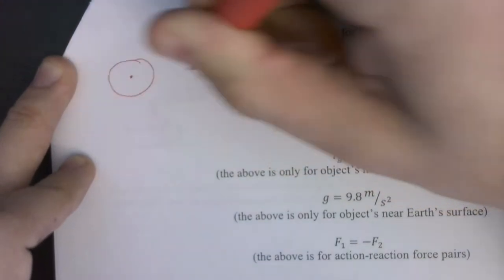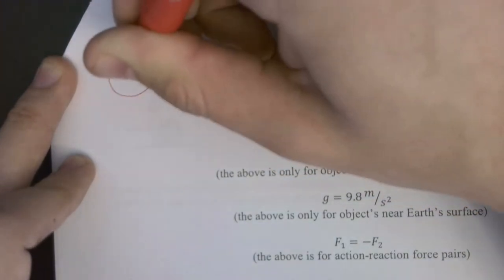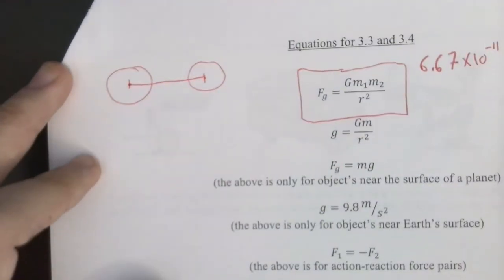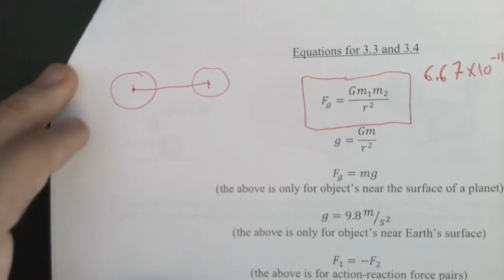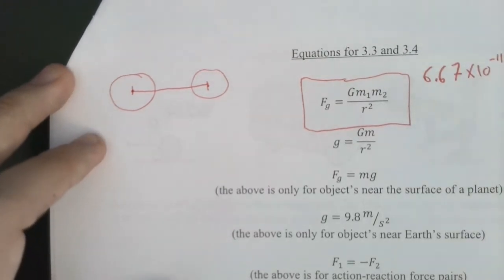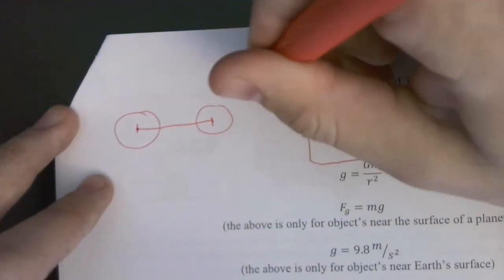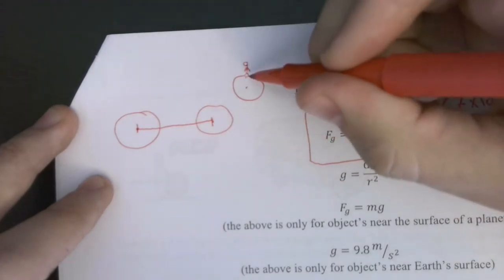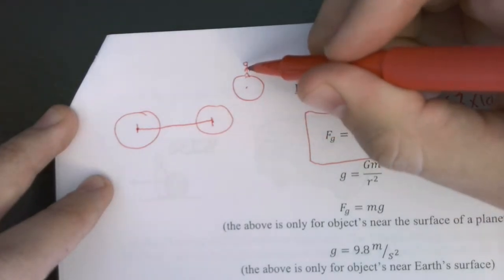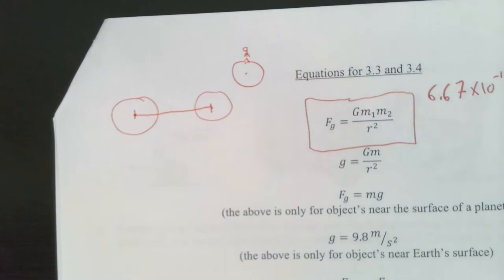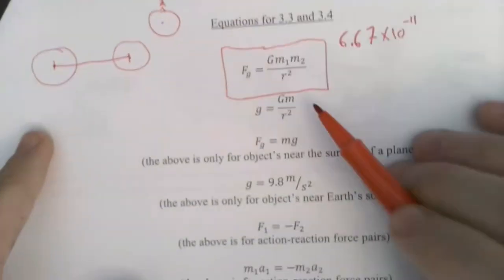For example, if I have the moon and the earth, you've got to measure from the center of one to the center of the other. For something like a person standing on a planet, you can just use the radius of the planet. Because if you're standing on a planet, the center of your body is one radius away from the center of that planet. You can kind of ignore the one meter that goes from your feet to your belly button.